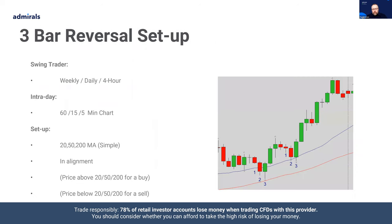So what do we look for and what kind of timeframe should we look at? Well, if you're a swing trader, you'll find these setups show up on things like the weekly chart, the daily chart, and the four-hourly chart. They'll even show up on the monthly chart, but that would be very rare indeed. If you're an intraday trader, you'll be looking at these on things like the 60-minute, 30-minute, 15-minute, and five-minute charts.